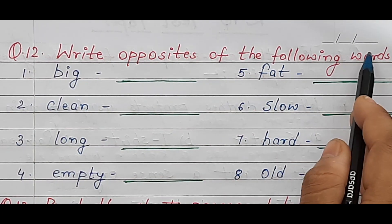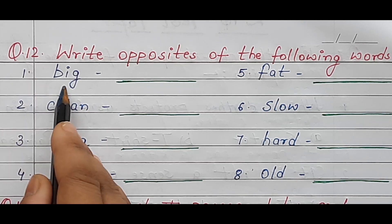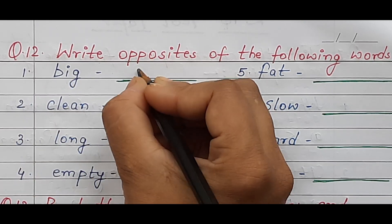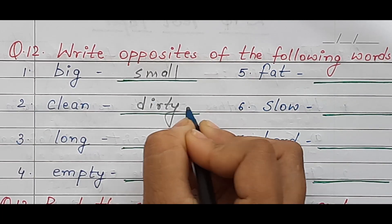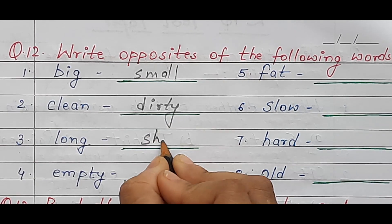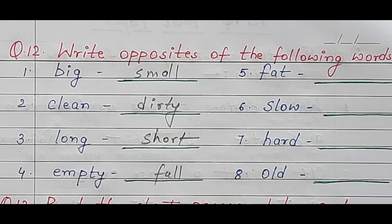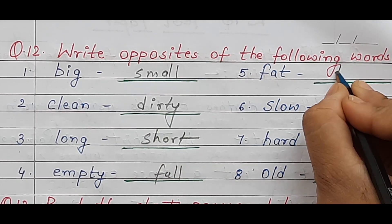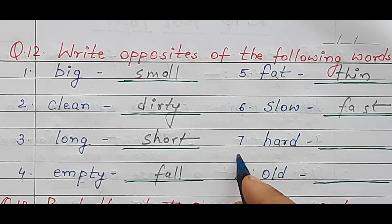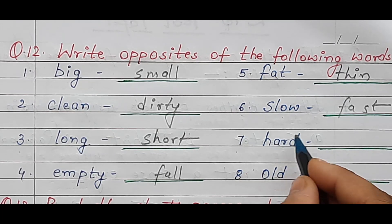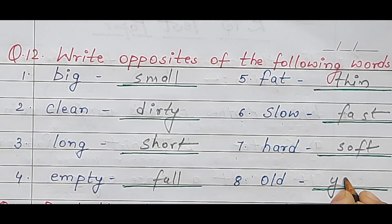Here is the next question: write the opposites of the following words. 'Clean' — opposite is 'dirty.' 'Long' — opposite is 'short.' 'Empty' — opposite is 'full.' 'Fat' — opposite is 'thin.' 'Slow' — opposite is 'fast.' 'Hard' — opposite is 'soft.' 'Old' — opposite is 'young.'